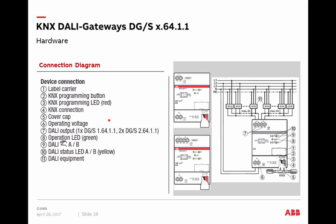A look at the hardware: the connection diagram for the two-fold device shows two independent channels, each connecting up to 64 DALI ballasts, with the DALI power supply, KNX connection, LEDs, and in this case two push buttons. One function of the push buttons is manual operation; the second is to start DALI addressing if necessary, by pressing longer on the button.